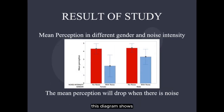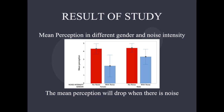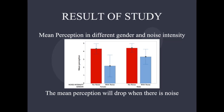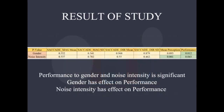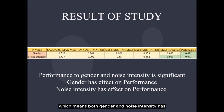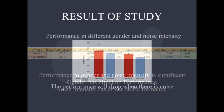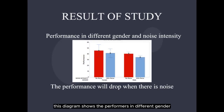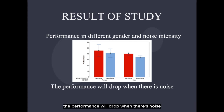This diagram shows mean perception in different genders and noise intensities. The mean perception will drop when there's noise. Performance by gender and noise intensity is significant, meaning both gender and noise intensity have an effect on performance. This diagram shows the performance in different genders and noise intensities — performance will drop when there's noise.